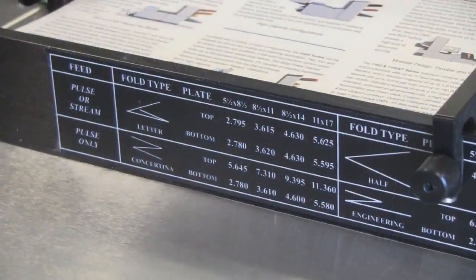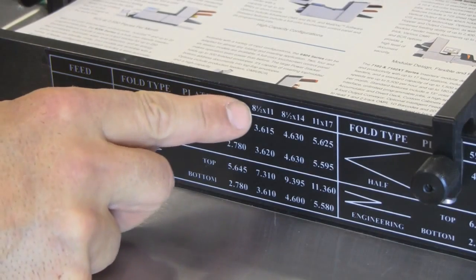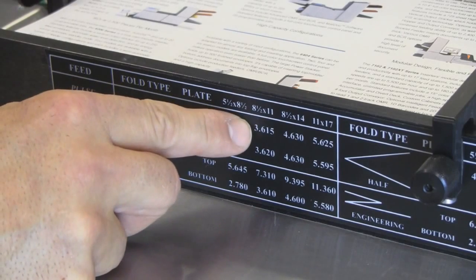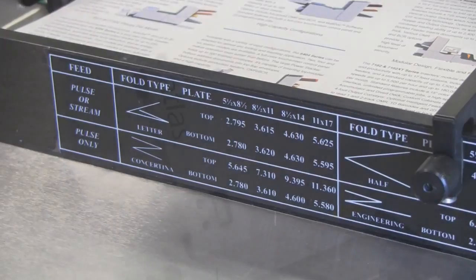Set the top fold plate first. Our paper is 8.5 by 11 inches and we want to do a letter fold. The guide indicates that the top fold plate needs to be set to 3.615. To do this, loosen the fold lock thumb screw.